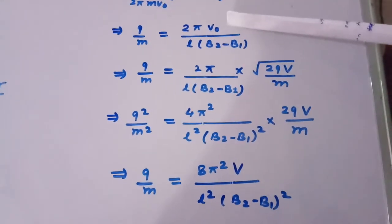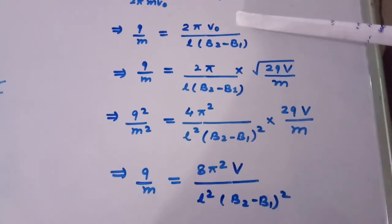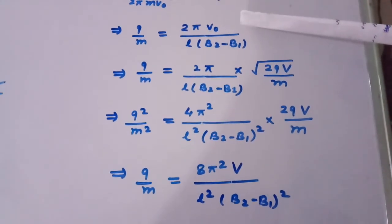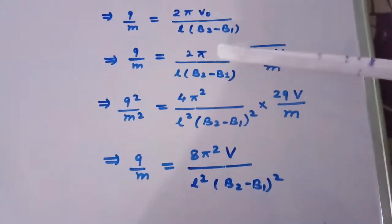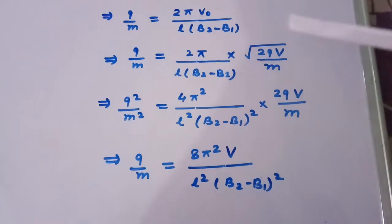Here we put the value of V0 which we have obtained as V0 equal to square root of 2Q capital V divided by M, so Q upon M equal to 2 pi divided by L times B2 minus B1 times square root of 2QV divided by M.